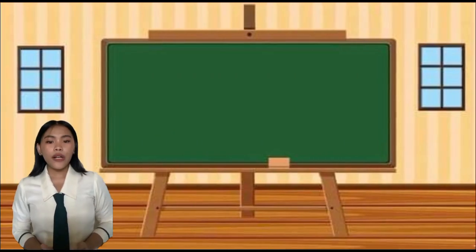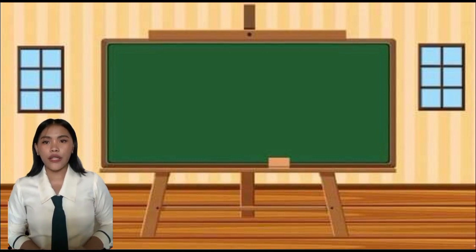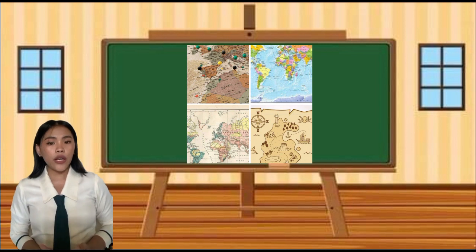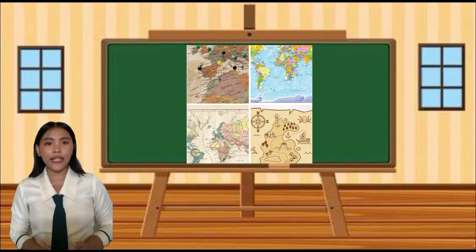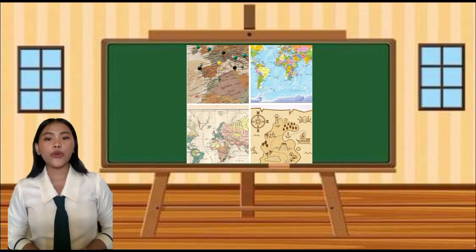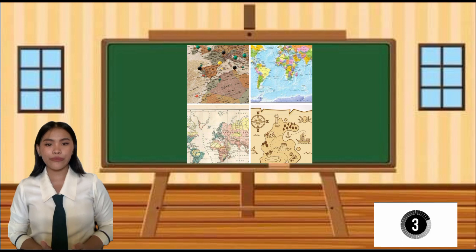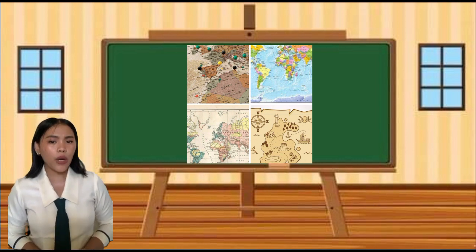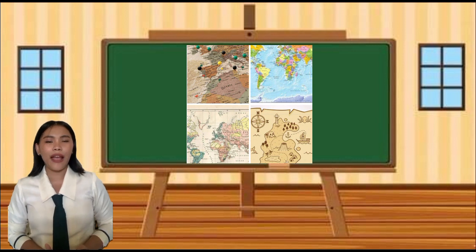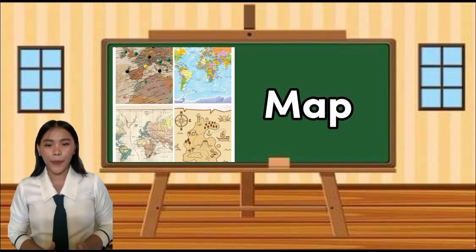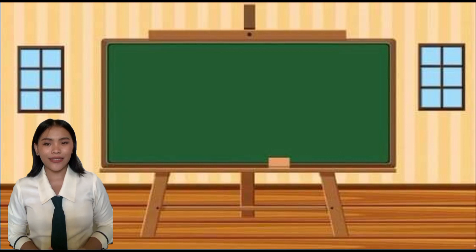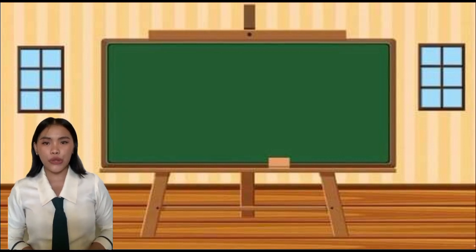Now let's start the activity. Here is the first item. It is a three-letter word which is described as a diaphragmatic representation of an area of land or sea. Your five seconds starts now. Time's up — what is your answer? Yes, it's a map. That is correct.